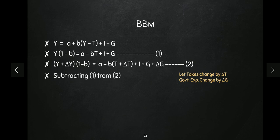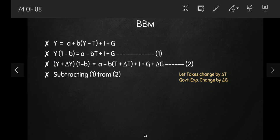Now when we subtract equation one from equation two, all the terms except the delta terms will cancel out. Y and Y will get cancelled, a and a will get cancelled, T and T will get cancelled, I will get cancelled, and G will also get cancelled. We will be left only with the delta terms — delta Y, delta T, and delta G.